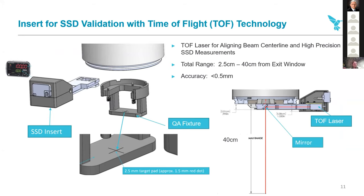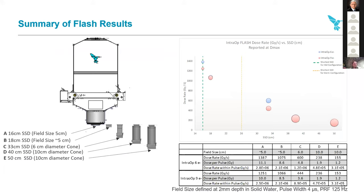The time-of-flight system covers 2.5 centimeters to 40 centimeters from the exit window. We define points A through E — A is right at the surface and E is at the maximal distance, around 50 centimeters, which is sort of an IORT treatment distance. The bubble chart on the right shows the dose at those different positions, with bubble size correlating to field diameter. Six MEV is blue and nine MEV is red. Our dose ranges from almost 1,400 grays per second at the exit down to about 150 grays per second at the farthest distance. The dotted green line shows the highest output shortest IORT configuration, and the yellow dotted line shows the shortest configuration with the DERM Quick Connect 360 collimator system.